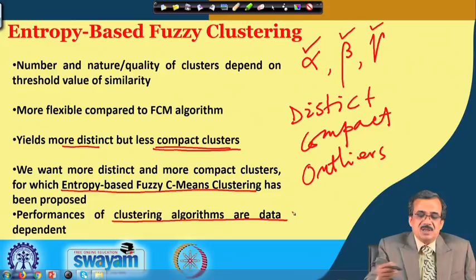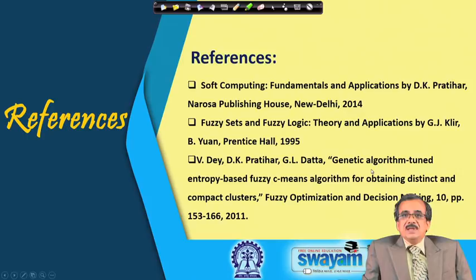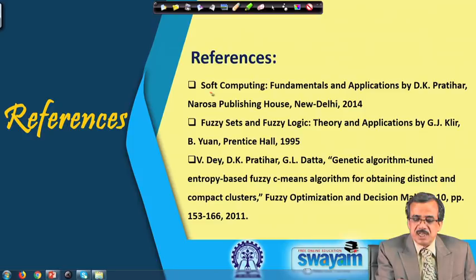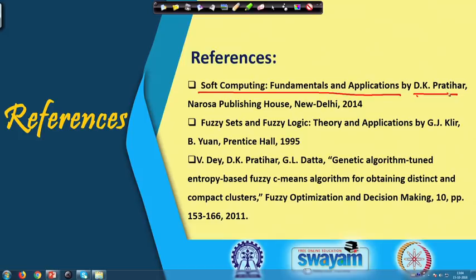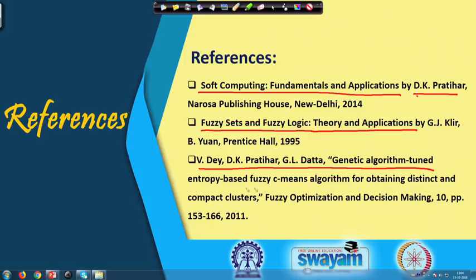The references for this course include the textbook Soft Computing Fundamentals and Applications. You can also consult the book Fuzzy Sets and Fuzzy Logic: Theory and Application by George Klein. For the combined entropy-based fuzzy clustering, you can look into the paper written by us: Genetic Algorithm Tuned Entropy-Based Fuzzy Siemens Clustering for Obtaining Distinct and Compact Clusters.